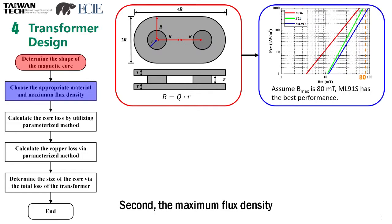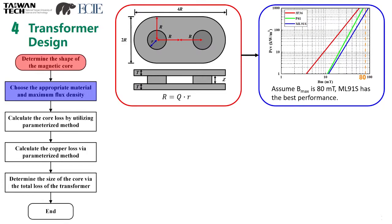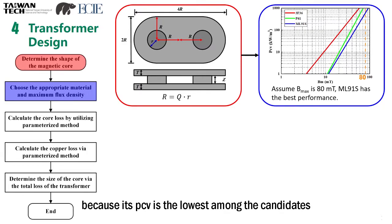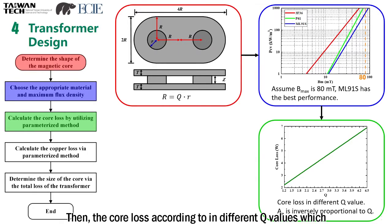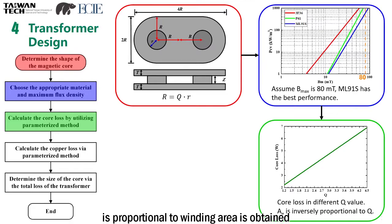Second, the maximum flux density is determined to be 80 mT to limit the core loss. Under this condition, ML91S is chosen because the PCB loss is the lowest among candidates. Third, the RDC and RAC of the winding are calculated by considering proximity and skin effects. Then the copper loss according to different Q values, which is proportional to the winding area, is obtained.